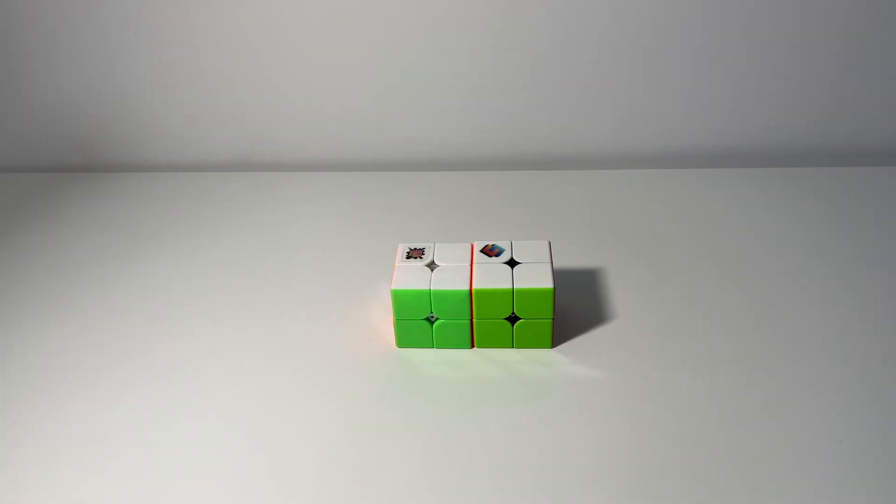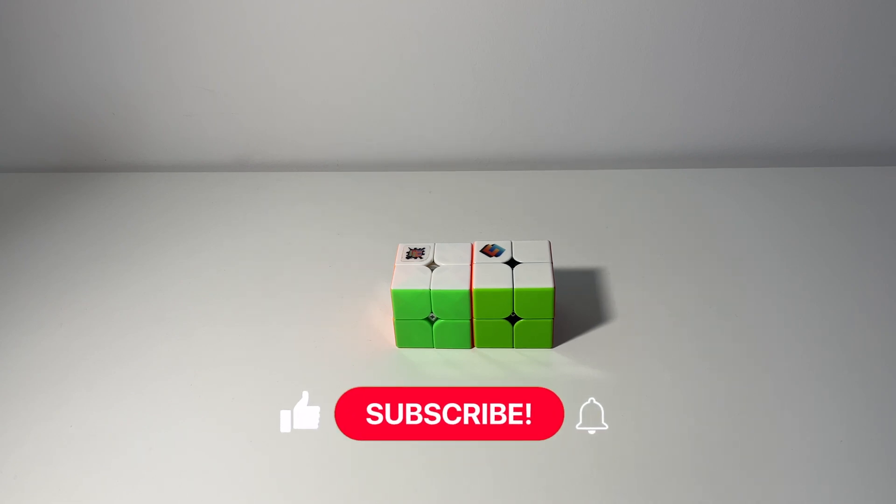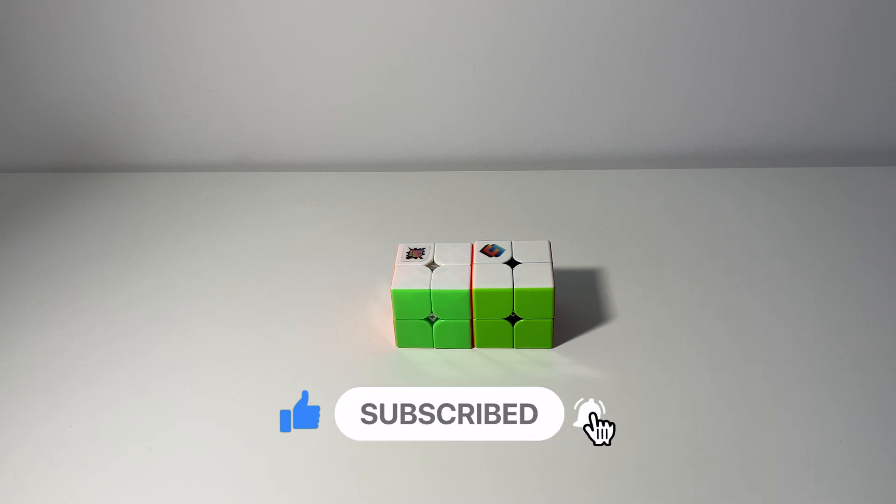That's pretty much it for today, guys. I hope you enjoyed and learned something new. I think you can now clearly tell the difference between a person who knows just CLL and EG1, and people who know multiple alg sets with AUF for a lot of the cases. They get faster times, and their solutions are also more efficient, complex, and smart. If you like this video, don't forget to like, smash that subscribe button, and hit that notification bell. I would really appreciate it. Thank you for watching, guys. Till next time. Bye.